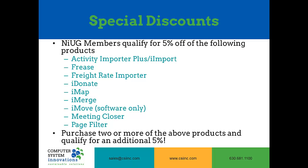Freight Rate Importer is a tool that allows you to import up-to-date freight rates and zones, as well as make changes to the fuel surcharge on the fly. iDonate was created to allow online donations to be made easier. iMap allows you to collect and store geolocation data by using the Google Location Services. iMerge allows you to merge records on the fly or in mass. iMove is a national change of address updating tool that allows you to stay current with the Postal Service requirements for accurate addresses.